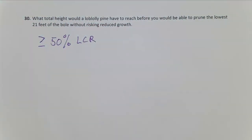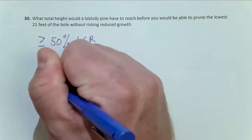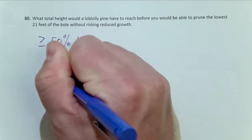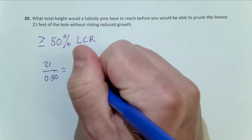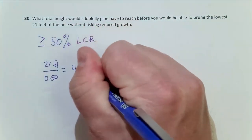And so the math on this will simply be the 21 feet of bole divided by 0.50 and that equals 42. Our units on 21 feet, our units on 42 are feet.